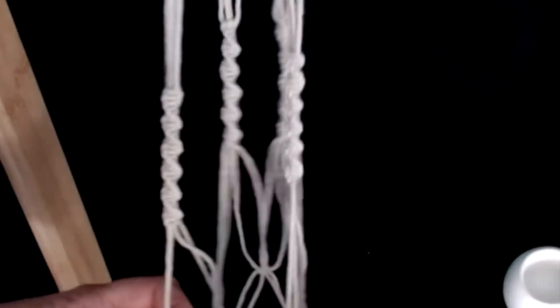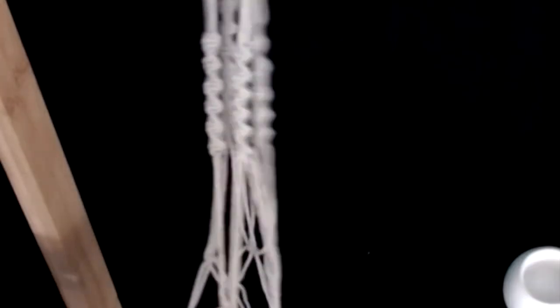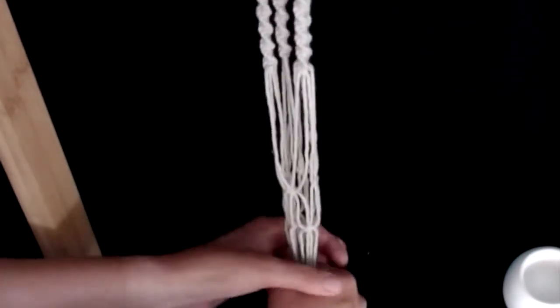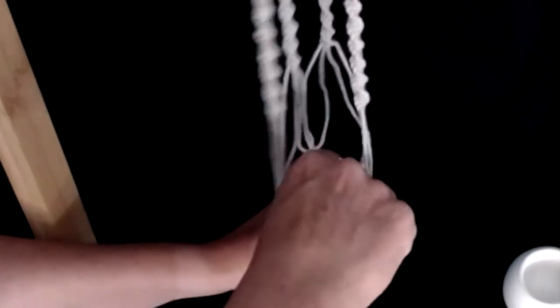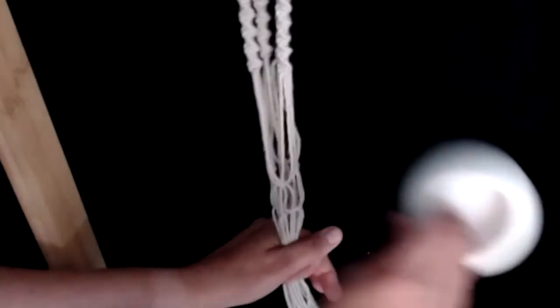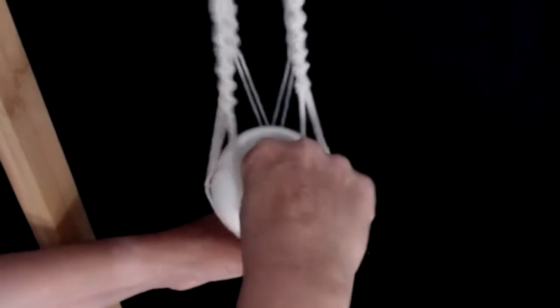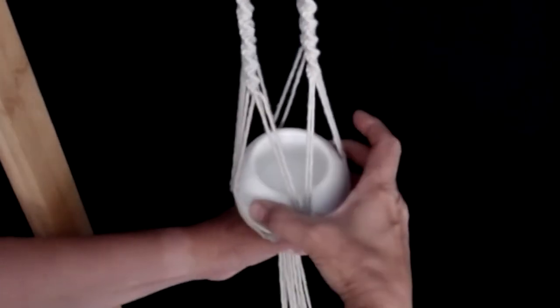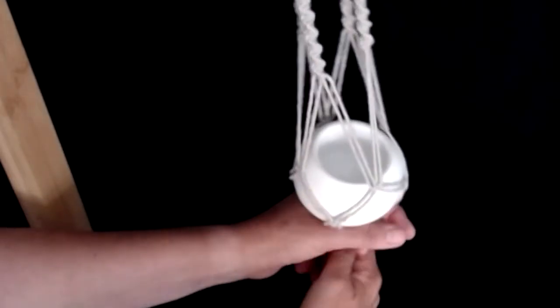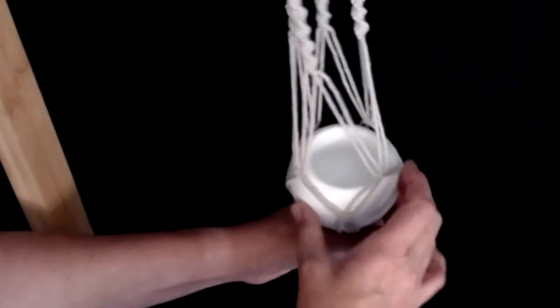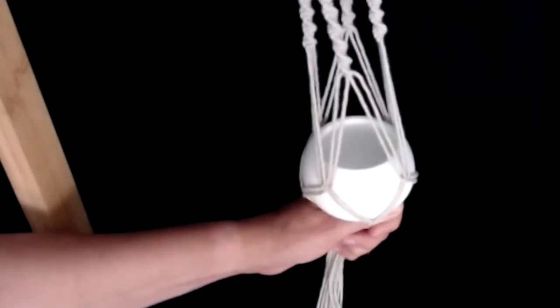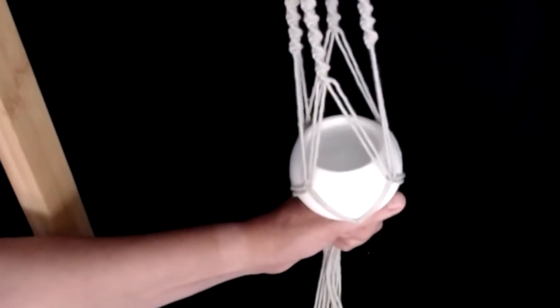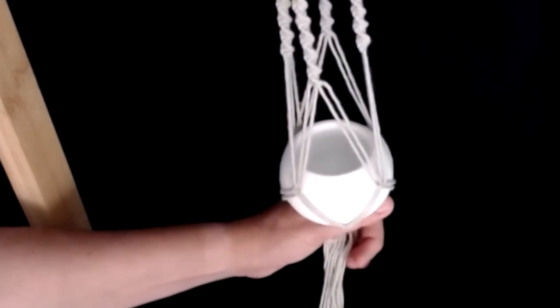So we now have something that resembles a net. What we need to do next is close our net off so that our pot can sit inside it. Measure how long you need those bottom pieces to be from your last knot to close it off. Be sure to hold your hands firmly at the bottom so that your pot doesn't fall out.